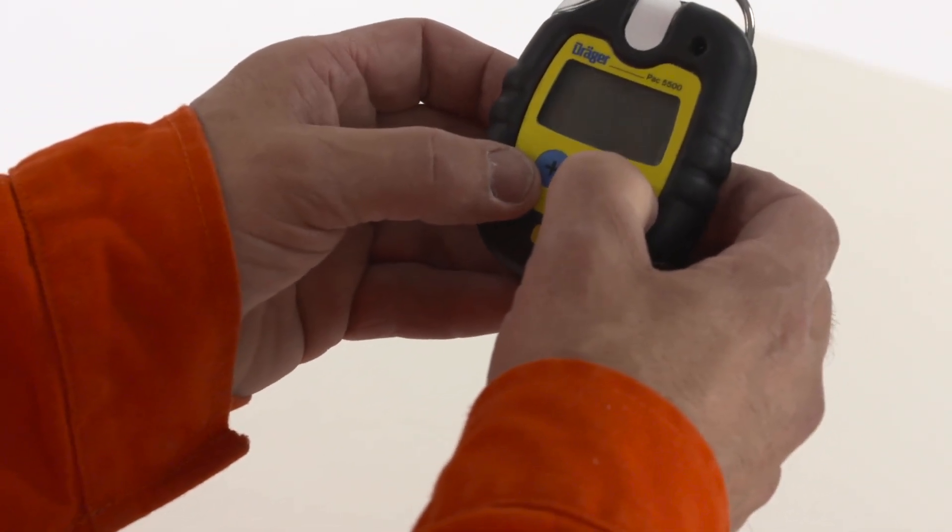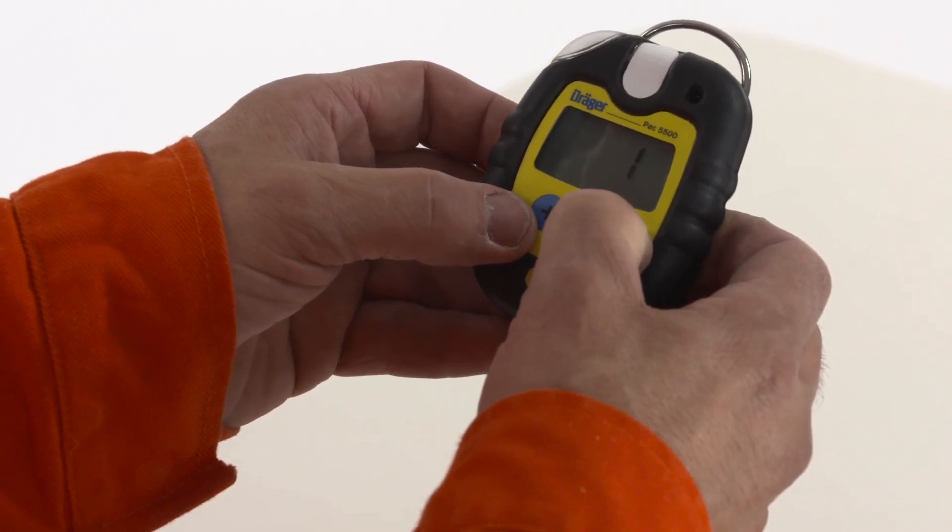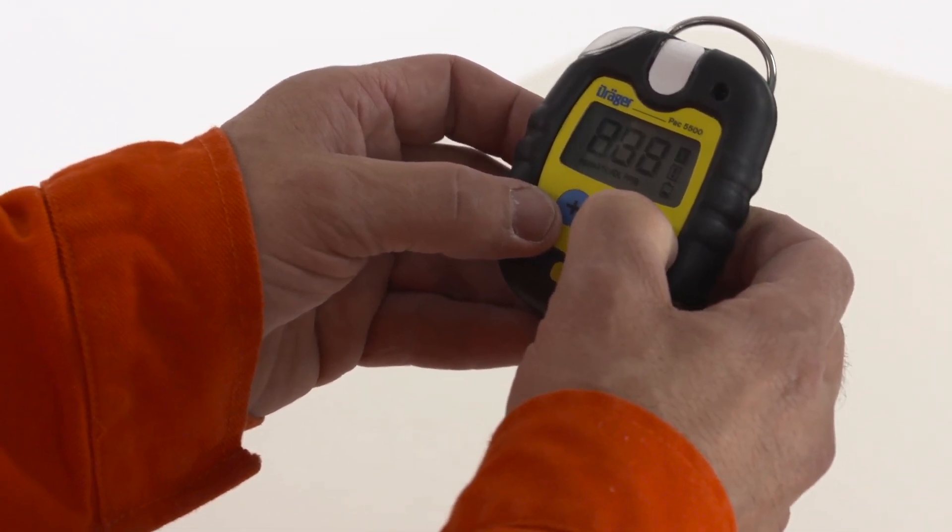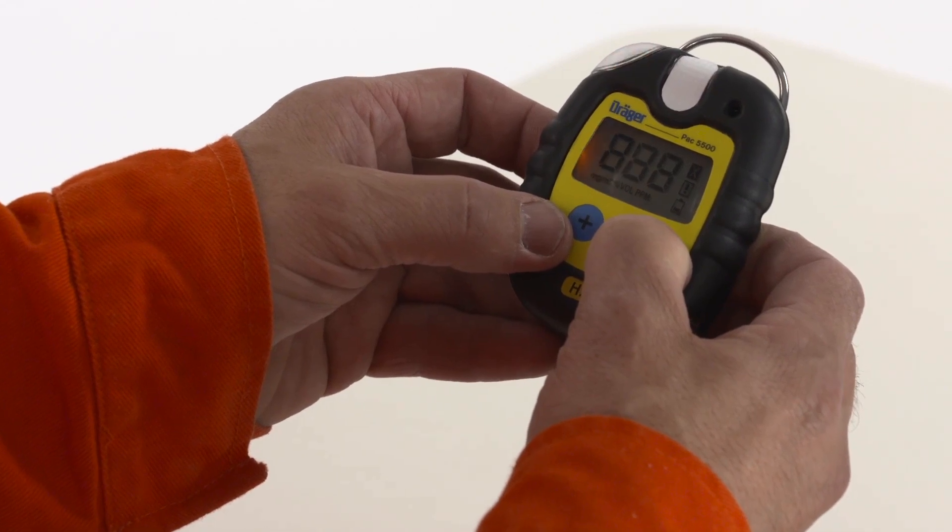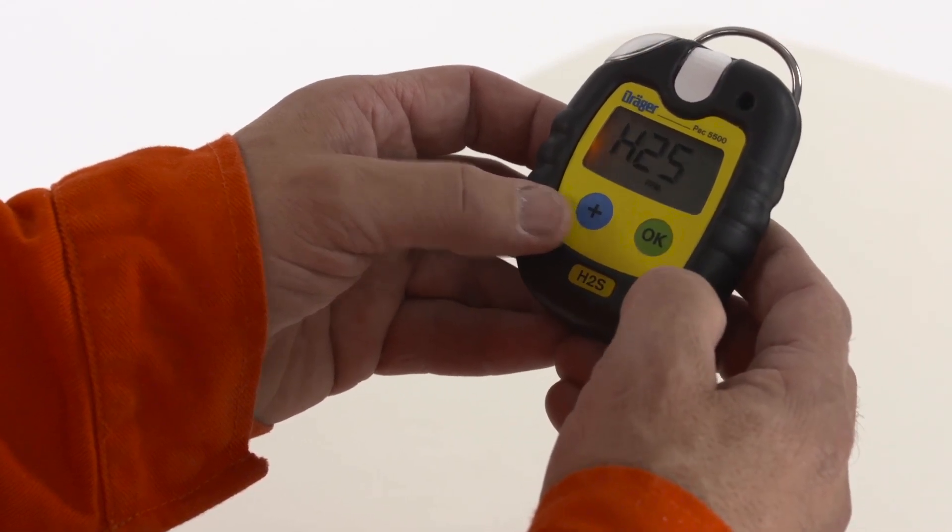To turn on the detector, press the OK key for 3 seconds. The detector will count down from 3 and the visual LED, audible and vibration alarms will indicate that the detector is activated.